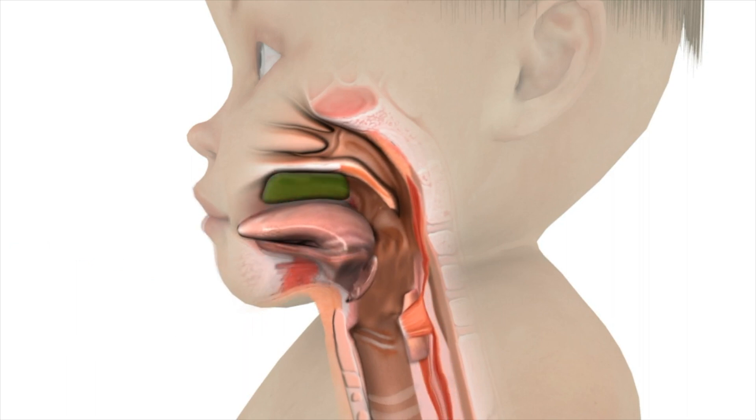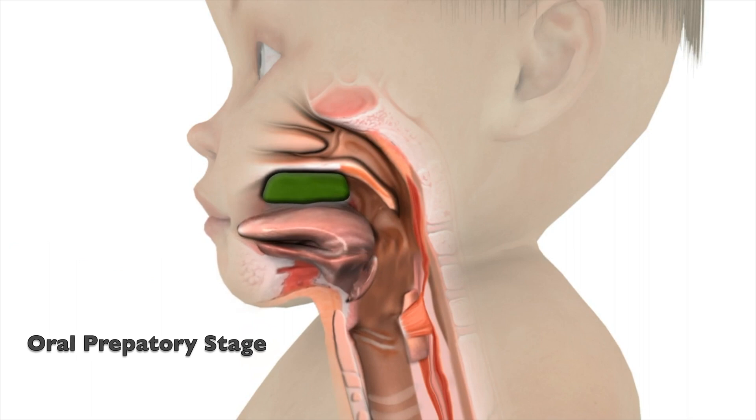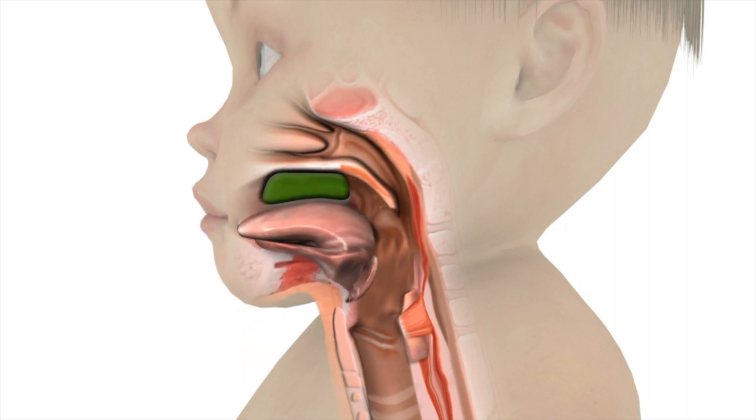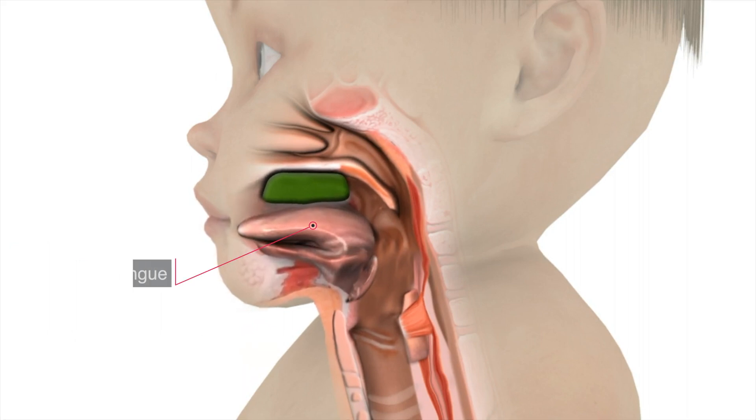During the oral preparatory stage, food is kept in the front part of the mouth where it is moistened with saliva and chewed into a softer consistency.